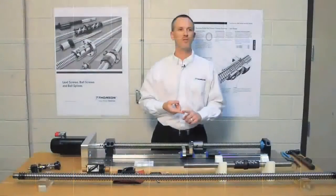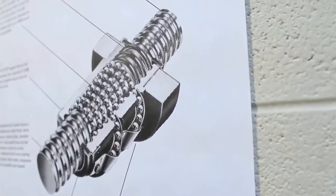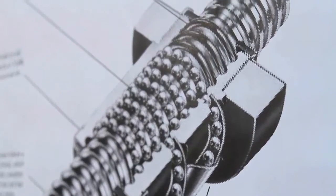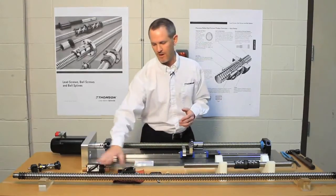You'll receive the ball screw in two different ways. One, as a complete assembly, where you send us the specs and we can produce whatever you want per your specifications. Otherwise, you'll get components where you'll get a ball screw and a ball nut.